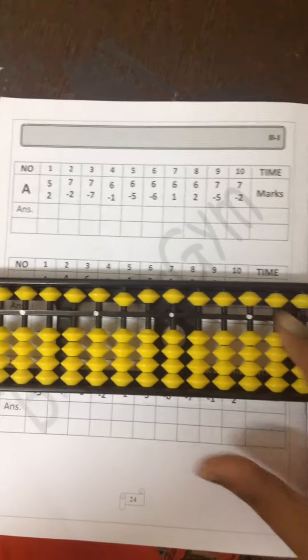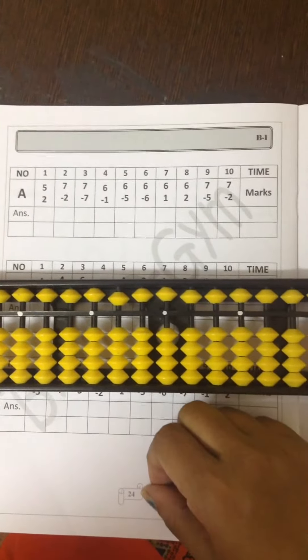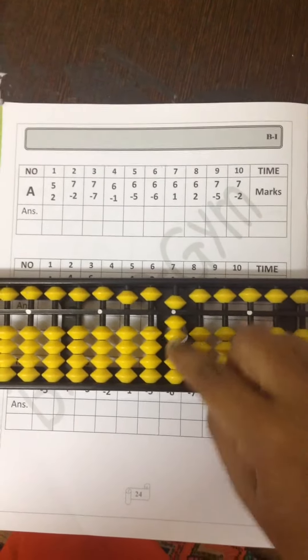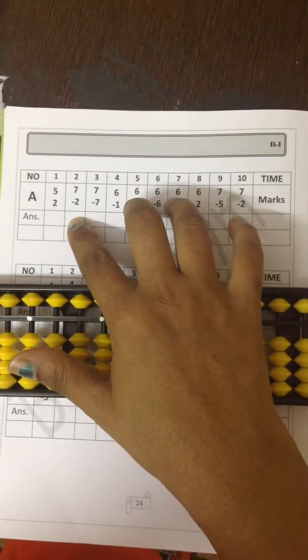This equation 5 plus 2 that is 7, and 7 plus 7 minus 2 that is 5. Write down the answer is 5.